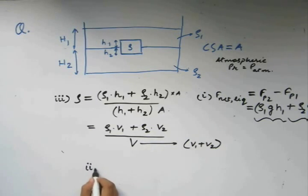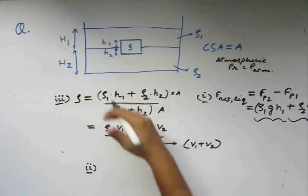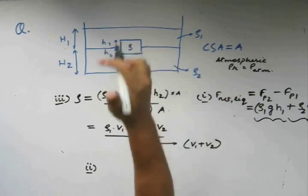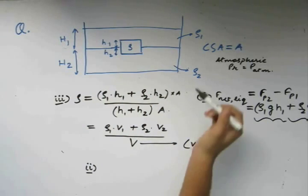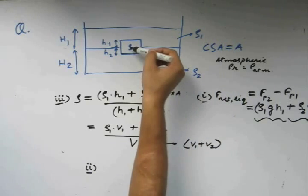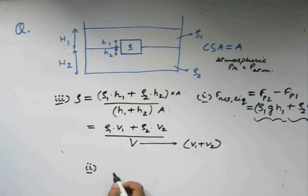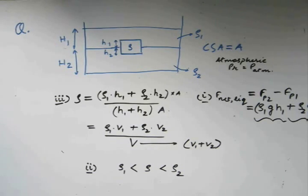Coming to the second part of the question — arranging rho 1, rho 2, and rho in increasing order of magnitude. If this setup is in equilibrium, the densest part settles at the bottom, then the intermediary, then the lighter part. So we have rho 1 being the least, followed by rho, followed by rho 2. This solves our question.